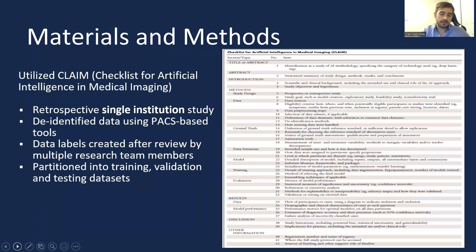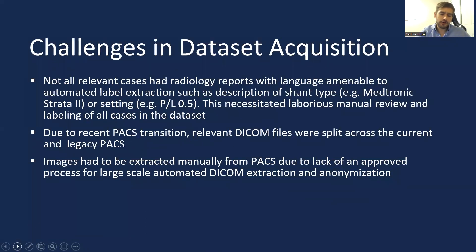We developed our AI training pipeline based on the checklist for AI in medical imaging guidelines, CLAIM. However, we encountered multiple challenges. Manual labeling was necessary before training the neural network since not all radiology reports identified the specific shunt valve position in the report text. Also, due to our PACS transition, the data was split across multiple PACS, and each image had to be manually extracted.